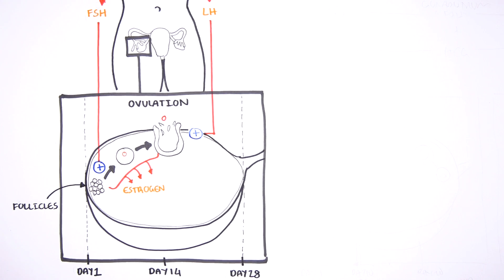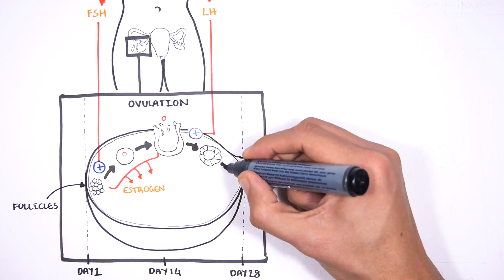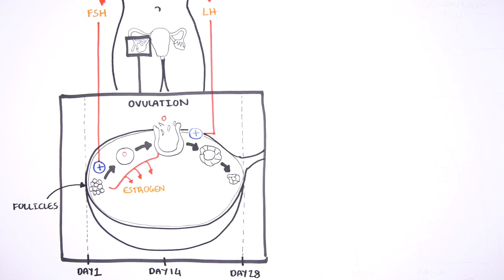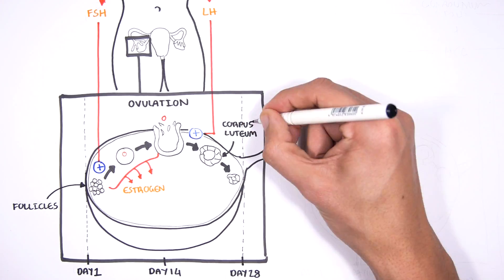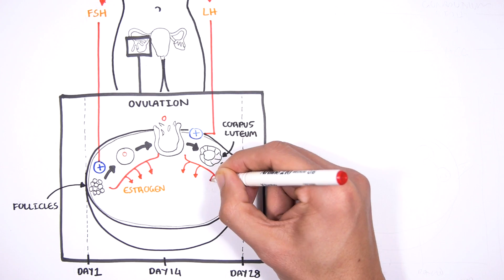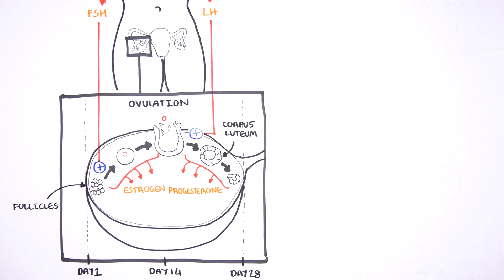The egg will then travel along the fallopian tube and will either be fertilized by the male sperm or not. The follicle that just released the egg will then become the corpus luteum, which slowly degenerates until day 28 of the menstrual cycle. Along the way, while it degenerates, the corpus luteum produces progesterone, an important hormone for pregnancy.